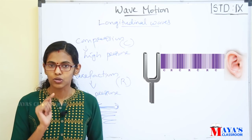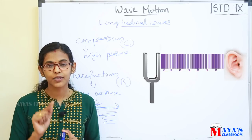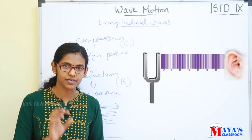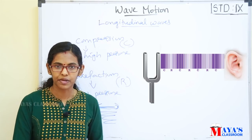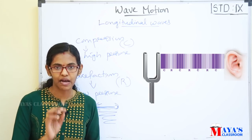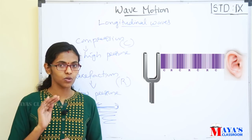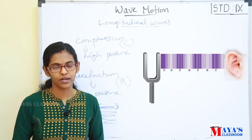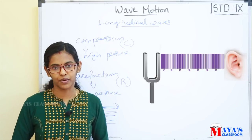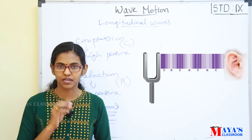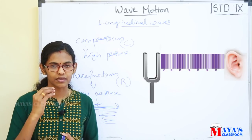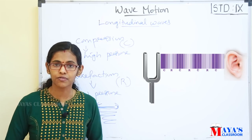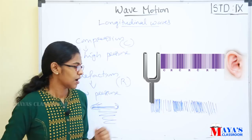In a longitudinal wave, the vibration is parallel to the direction of propagation of the particles. In transverse waves, the vibration is perpendicular to the direction of propagation of the particles.